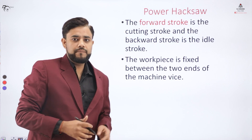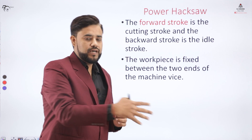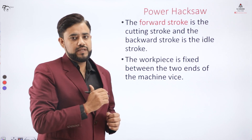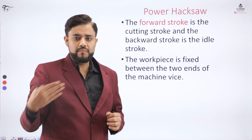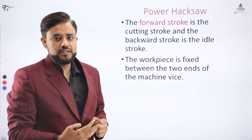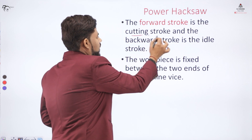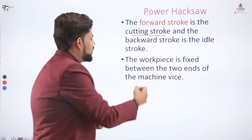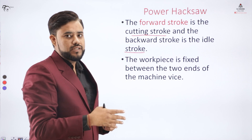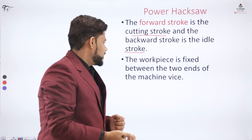Let us look at the operation. When the saw is moved in the forward direction, the cutting action takes place, and when the saw moves in the backward direction there is no cutting action. The forward stroke is called the cutting stroke and the backward stroke is the idle stroke. No cutting action takes place in the backward stroke, but in the forward stroke there is a cutting action.